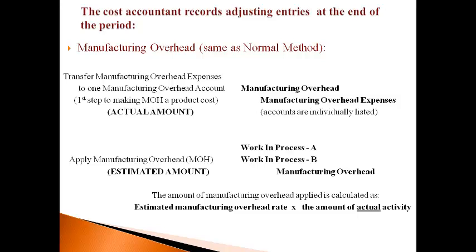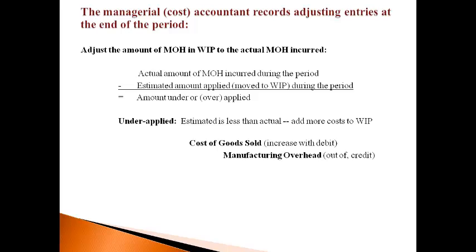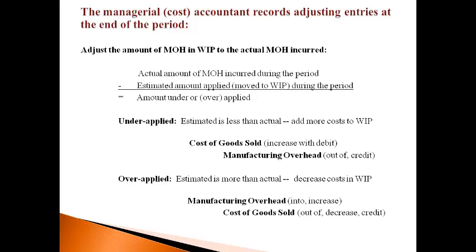A true-up entry to adjust the amounts in work in process to the actual amount is necessary. This entry adjusts the estimated amount that was moved to work in process to equal the actual amount of manufacturing overhead expense incurred in total for the company during the period. Under-applied means the amount of estimated cost moved to work in process is lower than the actual cost — the cost difference must be added. Over-applied means the amount of estimated cost moved to work in process is higher than the actual cost — the cost must be decreased. The purpose of this entry is to adjust manufacturing overhead costs in work in process to equal the actual total amount incurred. Cost of goods sold is used in these entries because it is not possible to know which product's WIP account to adjust.